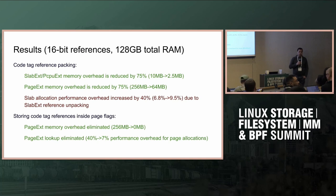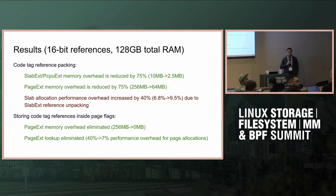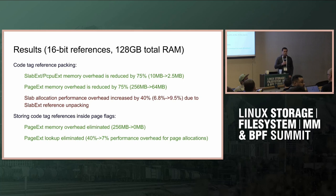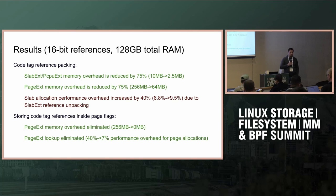There are calculations during build time for the page flags fields — for nodes, zones, and sparse mem sections. If altogether 16 bits are available for this feature, it can be used. The same thing applies for other features. If there are not enough bits for multi-gen LRU, compiling will fail with a warning. This is already possible today, so it doesn't change anything from that perspective.